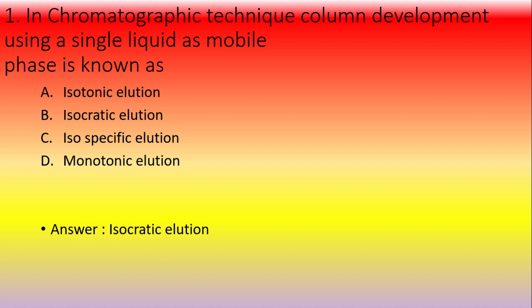Usually a single liquid is used; different liquids are used in column development to separate a mixture of substances. But here we are using a single solution — isocratic elution. 'Iso' means single, so isocratic elution means using a single mobile phase solution.